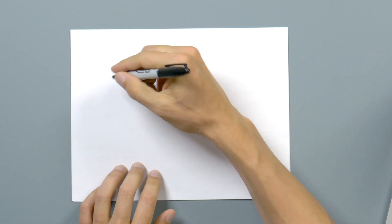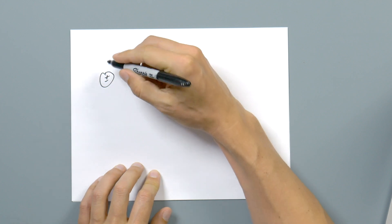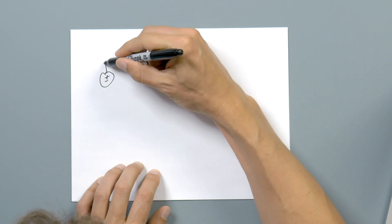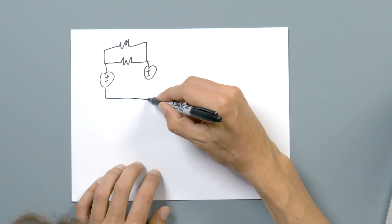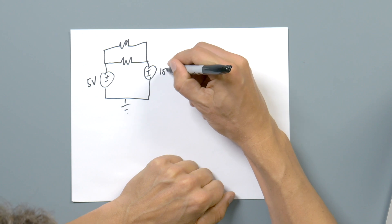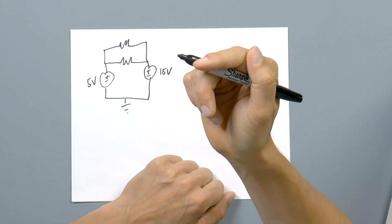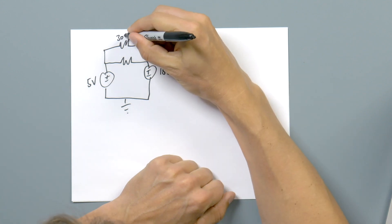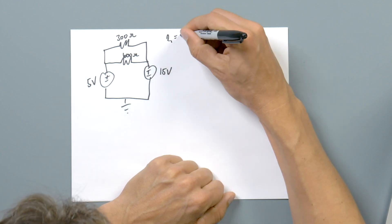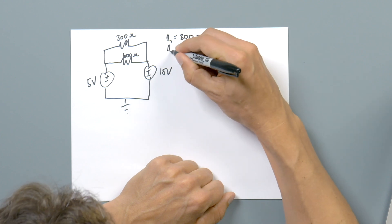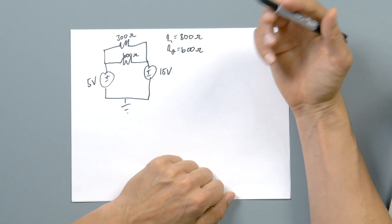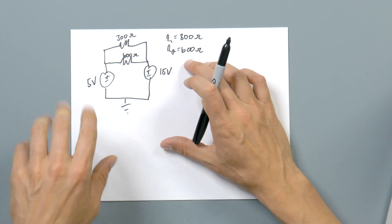I think it'll make a lot more sense by doing that. So I'm just going to make a very simple circuit with two resistors and two sources, with ground at the bottom. Let's make this 5 volts and 15 volts. We'll make this 300 ohms and this 600 ohms, so R1 equals 300 ohms and R2 equals 600 ohms. Now you look at this and think this can be simplified quite a bit, but it's the concept I'd like to go over. So we have two sources here.